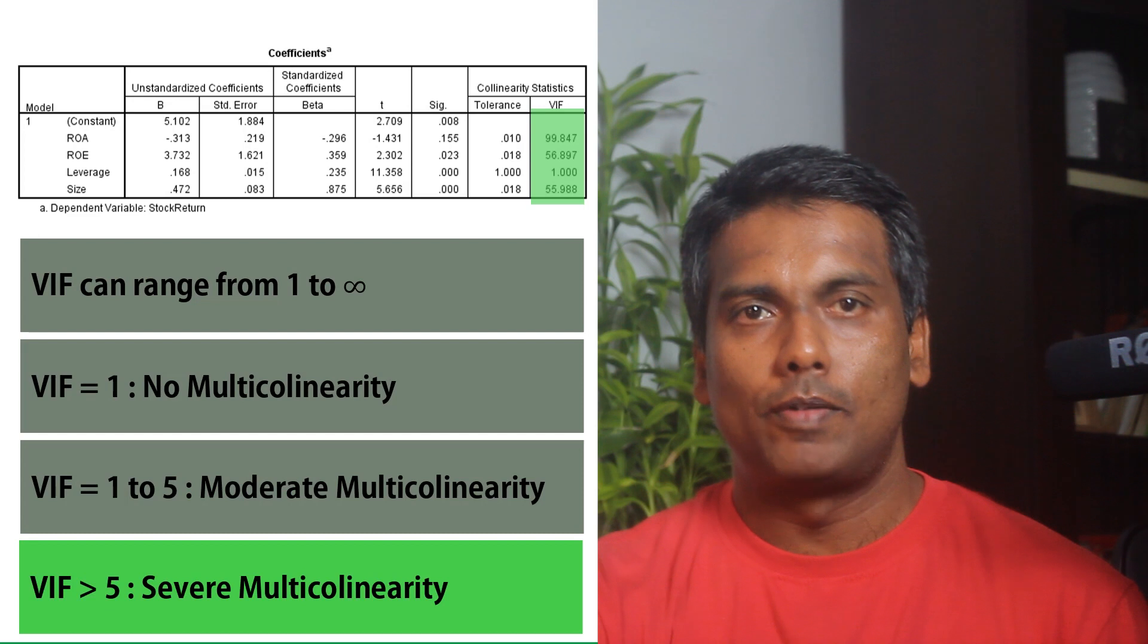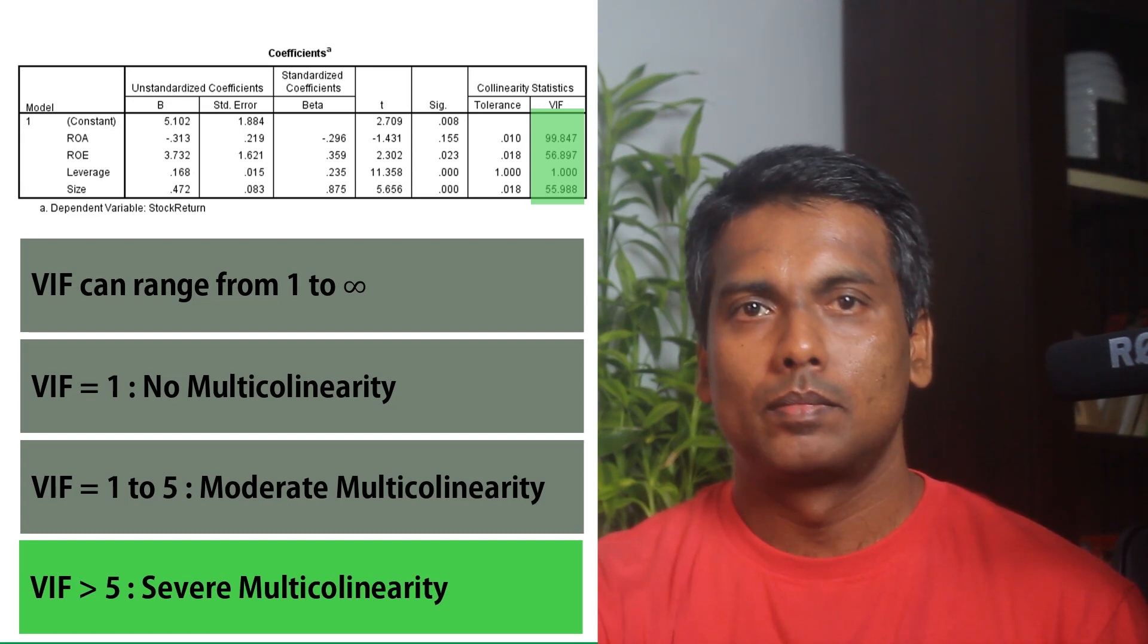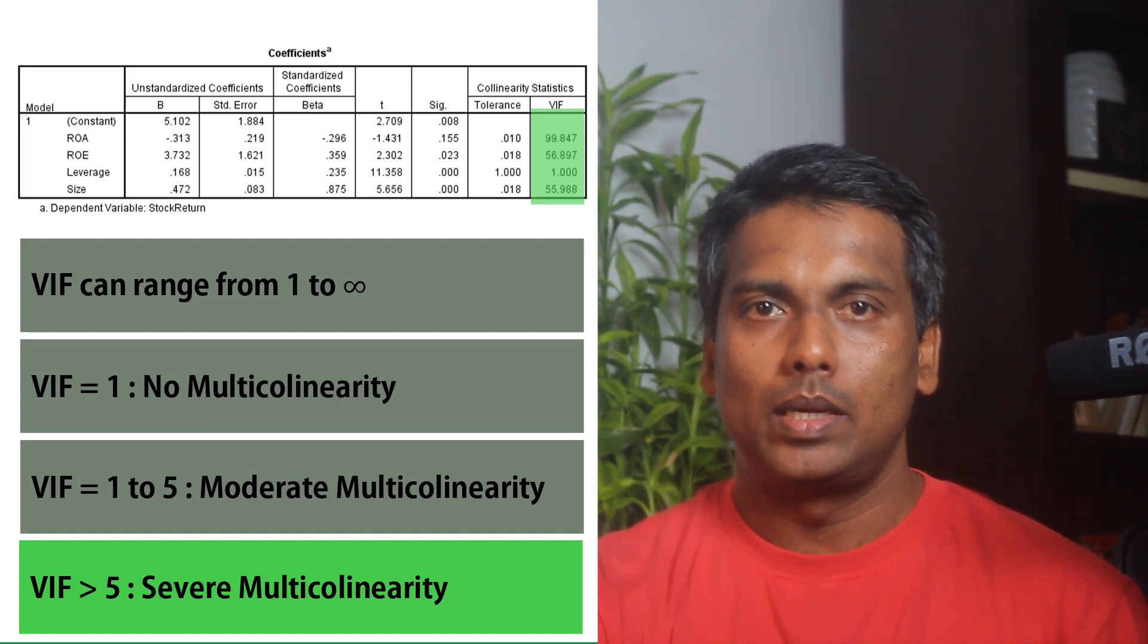However, if the VIF values are greater than 5, severe level of multicollinearity is present in the model. In this case, our regression results may be misleading since it is possible that the signs of the coefficients are poorly estimated or the p-values are not reliable.